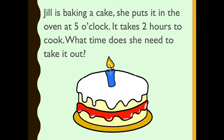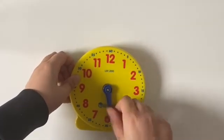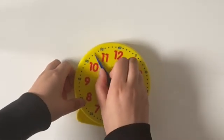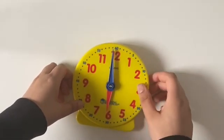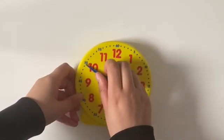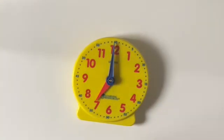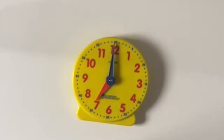The last question is: Jill is baking a cake. She puts it in the oven at 5 o'clock and it takes 2 hours to cook — what time does she need to take it out? If it takes 2 hours to cook we need to go around twice. That's 1 hour which is 6 o'clock, and then we add another hour. The big hand is on 12 and the small hand is on 7, so the answer is 7 o'clock. She needs to take it out at 7 o'clock.